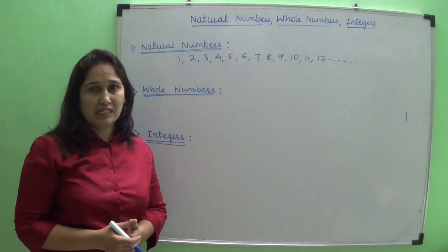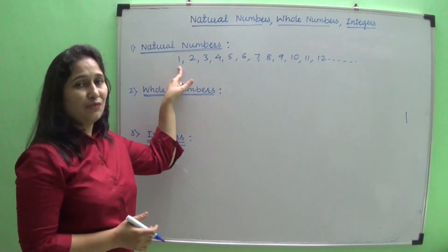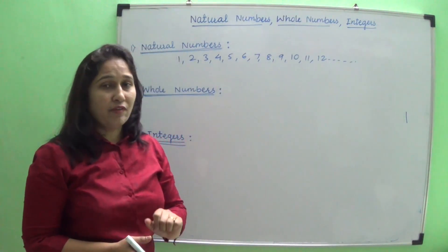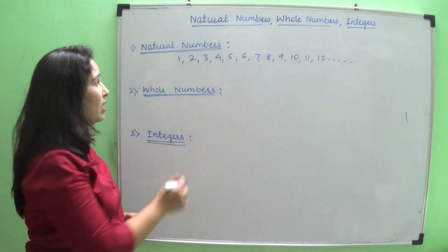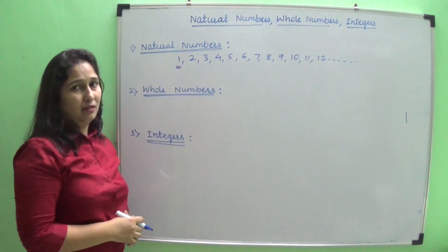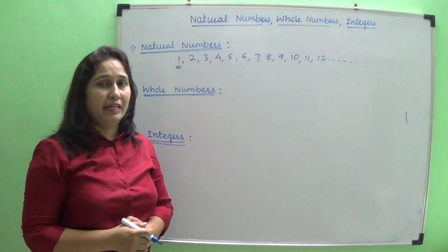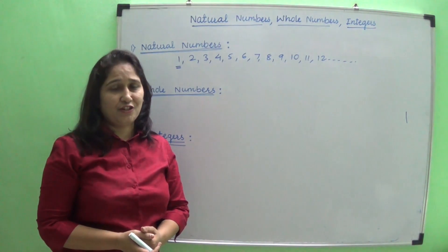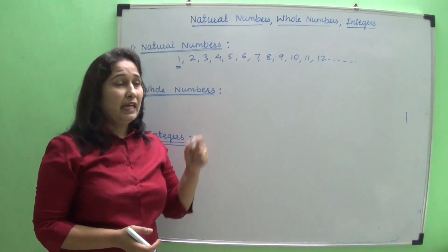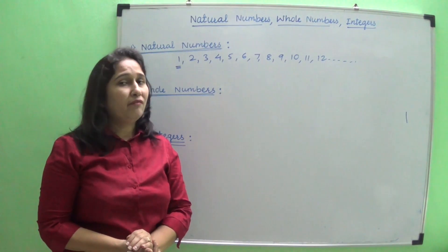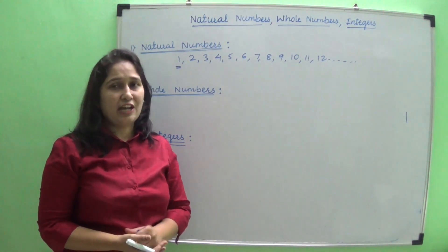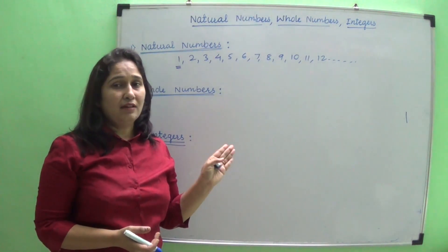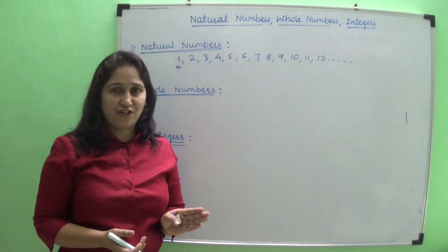Natural numbers start from one and extend towards infinity. The lowest natural number is one, but it is very difficult to find the largest natural number because it extends towards infinity. So we can't find the last natural number — the highest natural number is a totally undefined term.